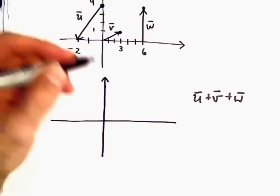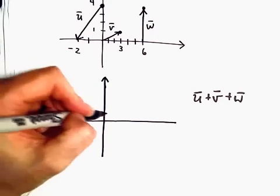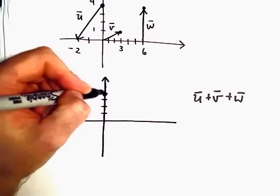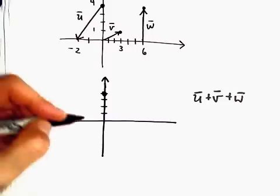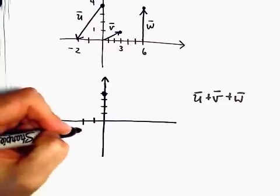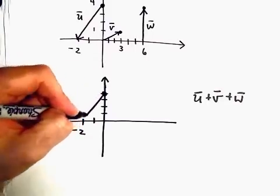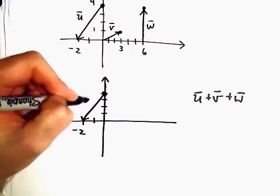The first thing I'm going to do is just think about vector u. So vector u, again, starts at the point (0, 4) and stops at (-2, 0). So there's vector u.